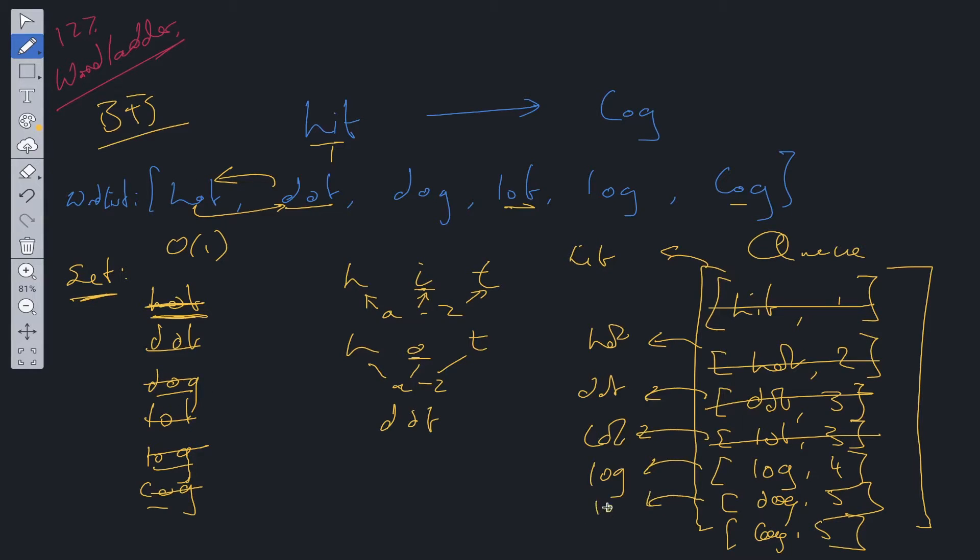Now when we look at dog it cannot go anywhere within the set. So this ends here. Then we shift off of queue. We have cog. We make the check to see whether cog is the end word. It is. So we return count which is equal to five.